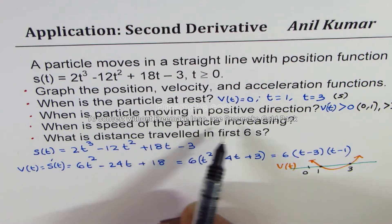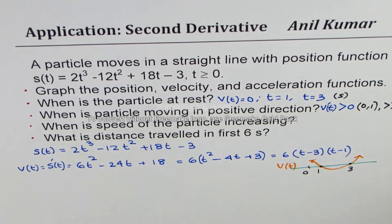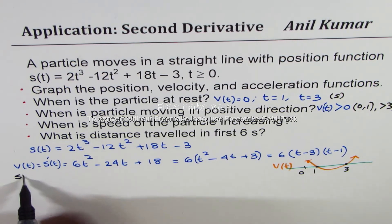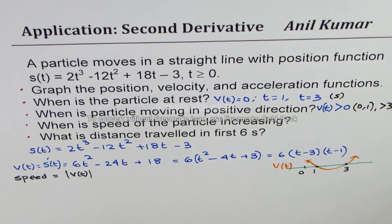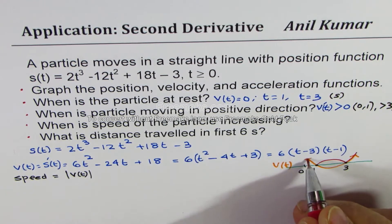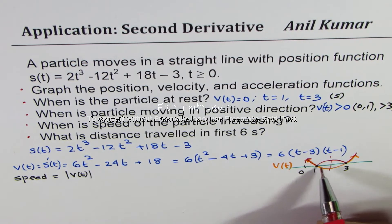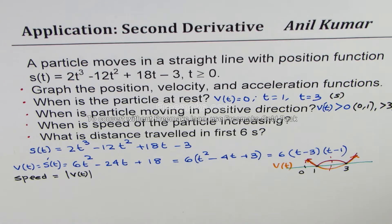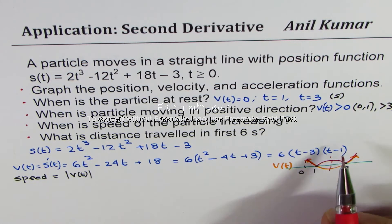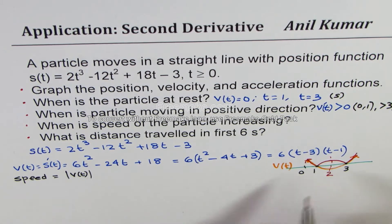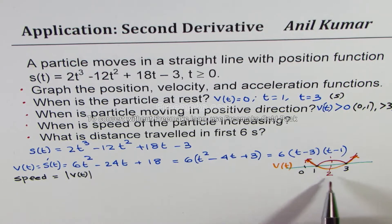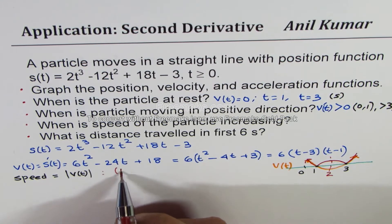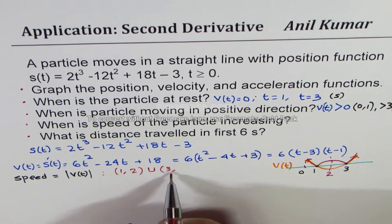When is the speed of the particle increasing? Speed is the absolute value of velocity. Sketching the speed graph from the velocity parabola, speed is increasing where the graph rises. Since the parabola has its minimum at t = 2 (the midpoint of 1 and 3), speed increases from t = 1 to t = 2 and again from t = 3 to infinity.